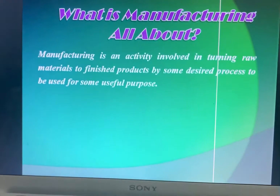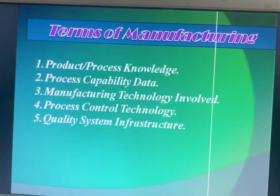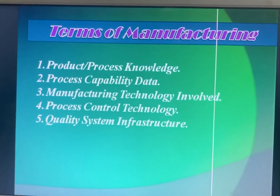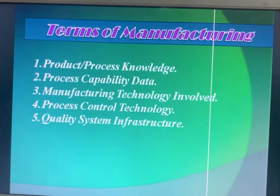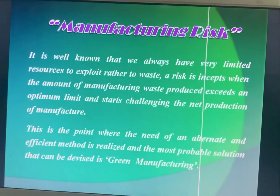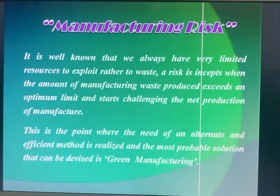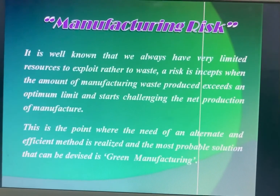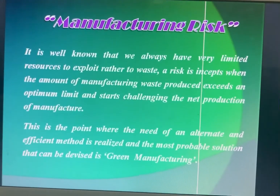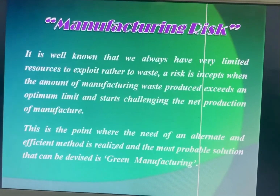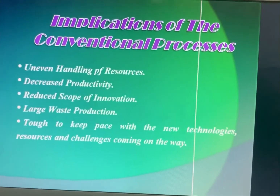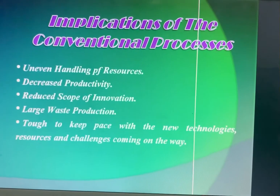This slide shows particular terms of manufacturing: product, process, manufacturing technology, process control, technology, quality system, and infrastructure. There is always a risk in manufacturing. We always have very limited resources to exploit, rather than waste. When the amount of manufacturing waste produced exceeds an optimum limit, it starts affecting the net production of manufacturing.